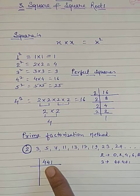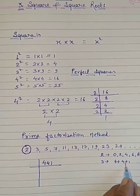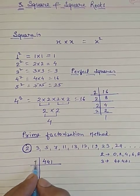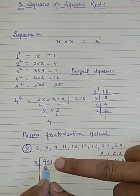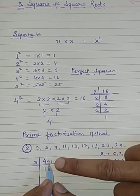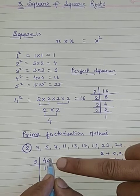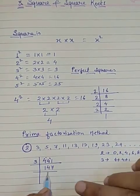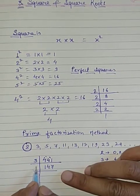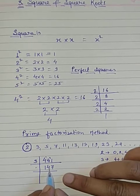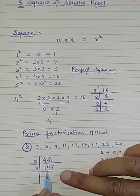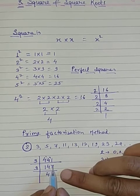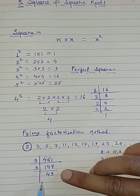जैसे 441 है तो 4+4+1=9, और 9 से 3 से डिविजिबल है। तो यह नंबर 3 से डिविजिबल होगा। इस तरह से हम डिविजिबिलिटी टेस्ट करके प्राइम फैक्टराइजेशन करते हैं।